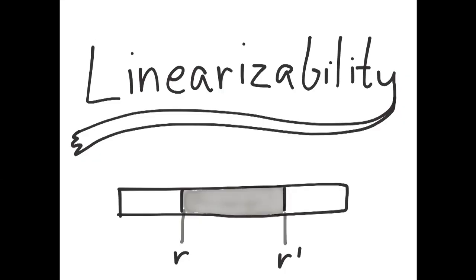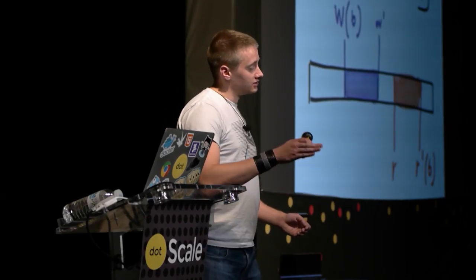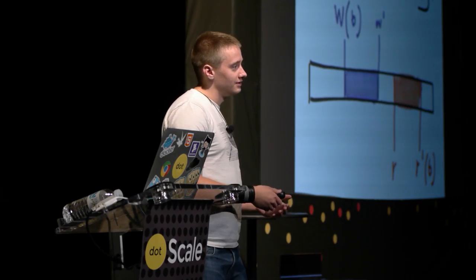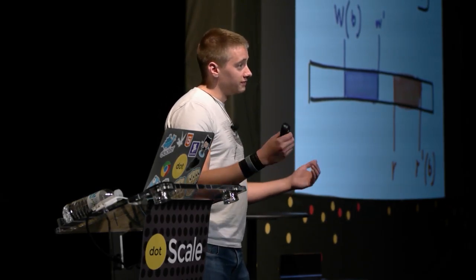We call this property linearizability, and it's sort of the gold standard for concurrent systems. It gives us really nice invariants: if I complete an operation — say a write of B — any future read is guaranteed to see B, no matter what process it comes from. So if I communicate via a side channel, that process will see B; it won't see an earlier value. We're guaranteed a partial order which applies to all events, all operations in the timeline, which are not concurrent. So if their windows don't intersect, you're guaranteed those things happened in order.